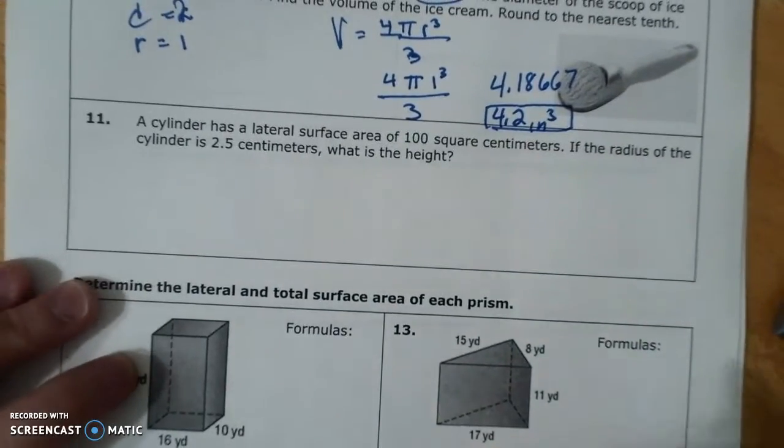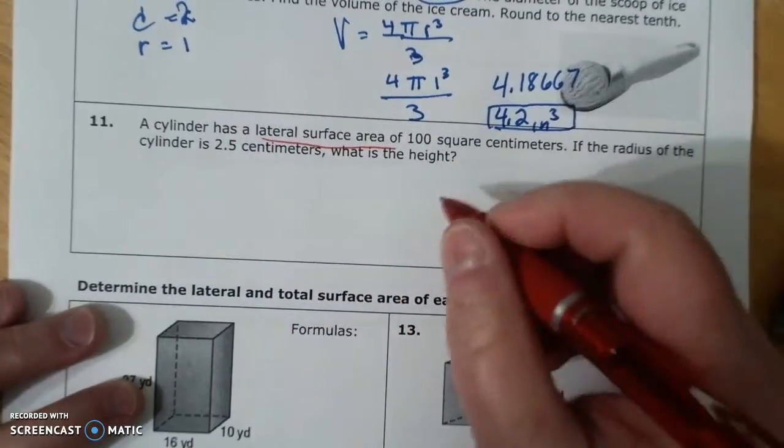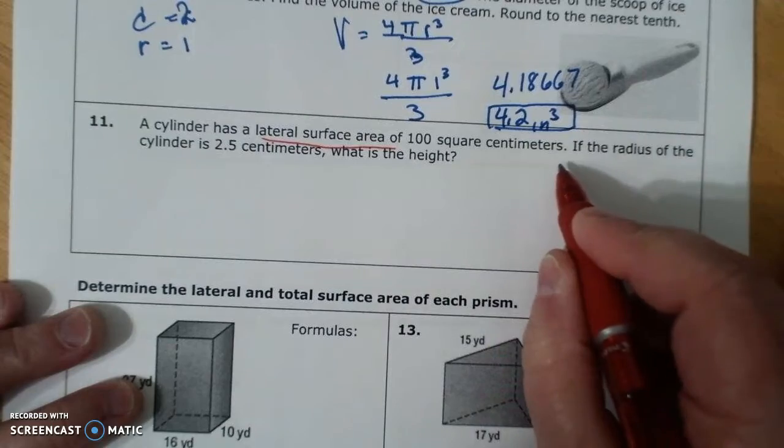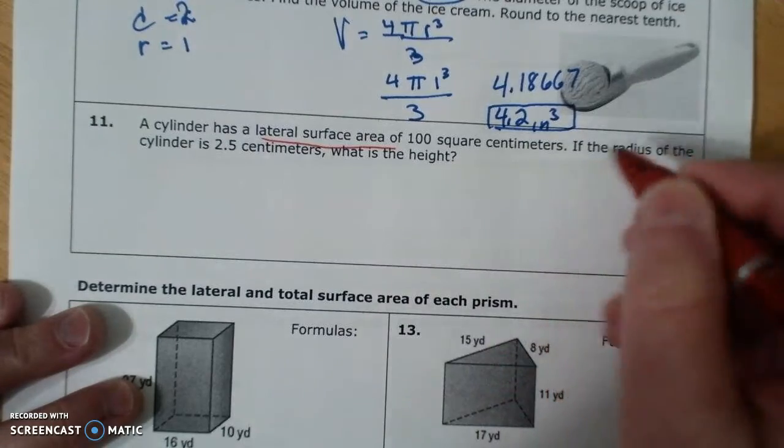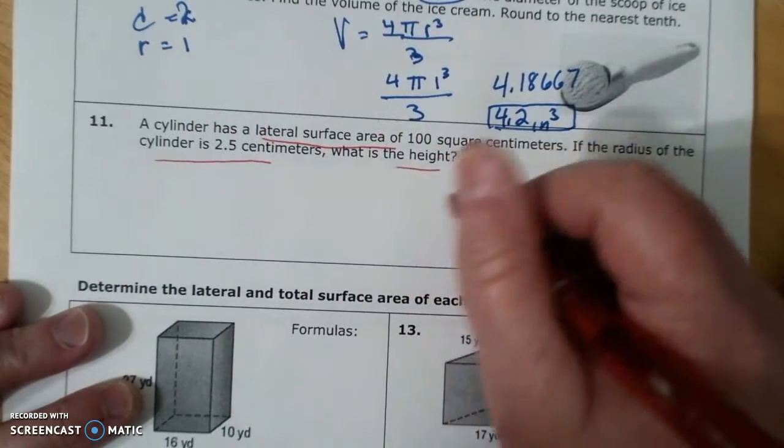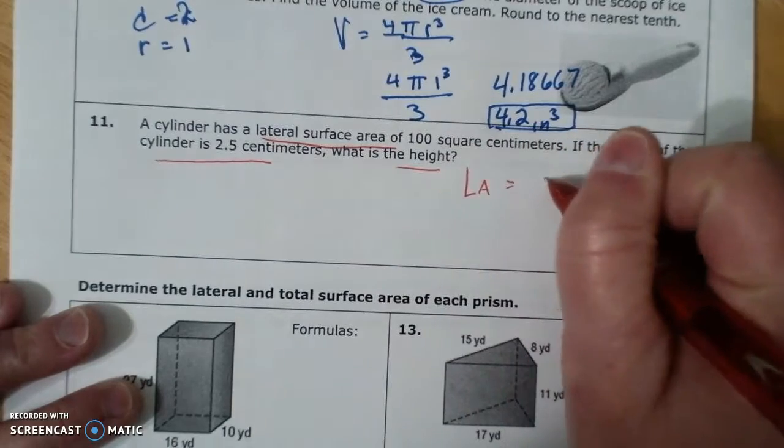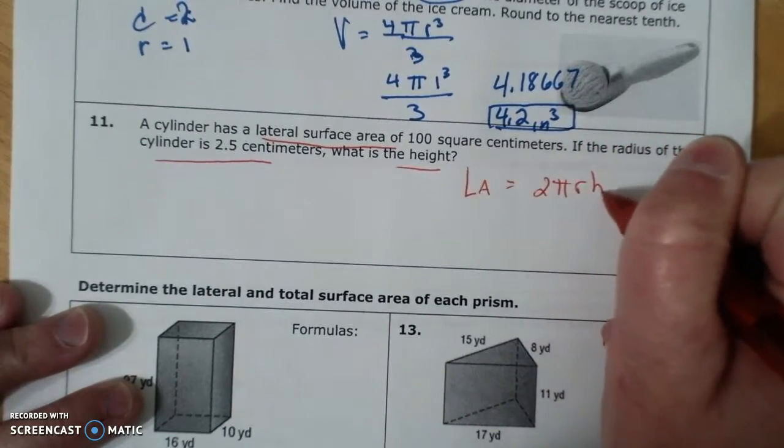A cylinder has a lateral surface area of 100 square centimeters. If the radius is 2.5, what is the height? So lateral is 2 pi r h.